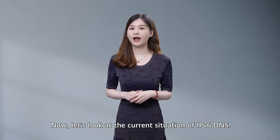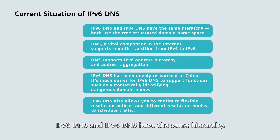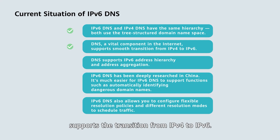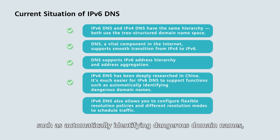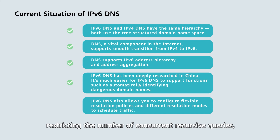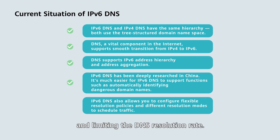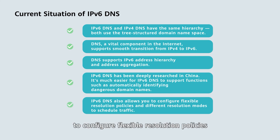IPv6 DNS and IPv4 DNS have the same hierarchy. DNS, a vital component in the Internet, supports the transition from IPv4 to IPv6. It also supports IPv6 address hierarchy and address aggregation. IPv6 DNS has been deeply researched in China. It's much easier for IPv6 DNS to support functions such as automatically identifying dangerous domain names, restricting the number of concurrent recursive queries, and limiting the DNS resolution rate. IPv6 DNS also allows you to configure flexible resolution policies and different resolution modes to schedule traffic.